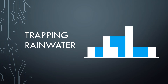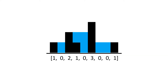Let's take a look at the trapping rainwater problem. We are given an array of positive integers which represents the heights in a map. Each of the heights has a width of one and we need to return the area of water this map can collect on a rainy day. In this example, black represents the heights and blue represents the water that can be collected. The answer is six because six blocks of water are collected.